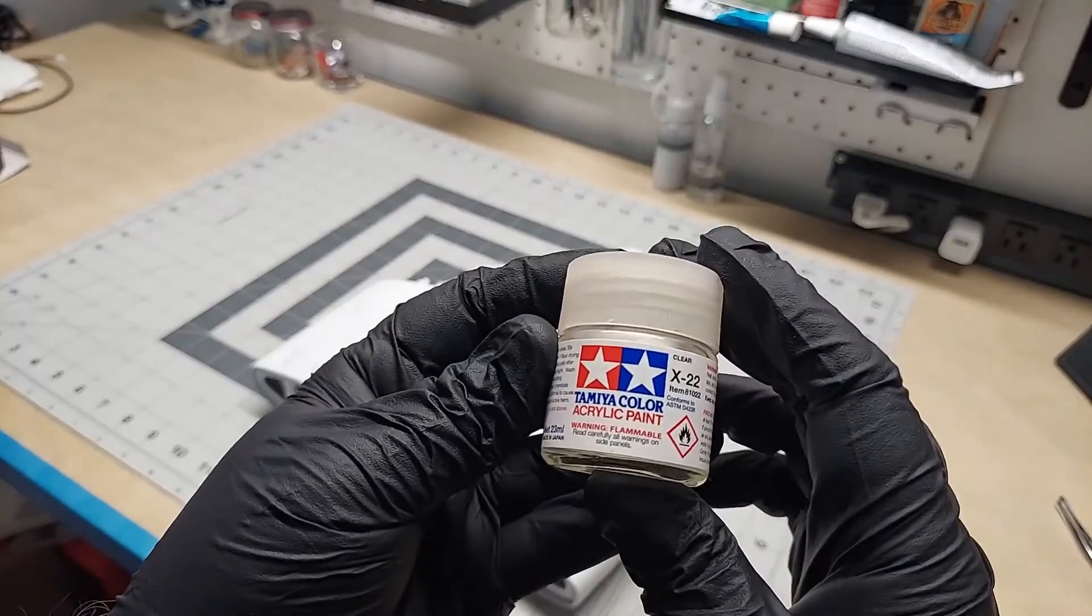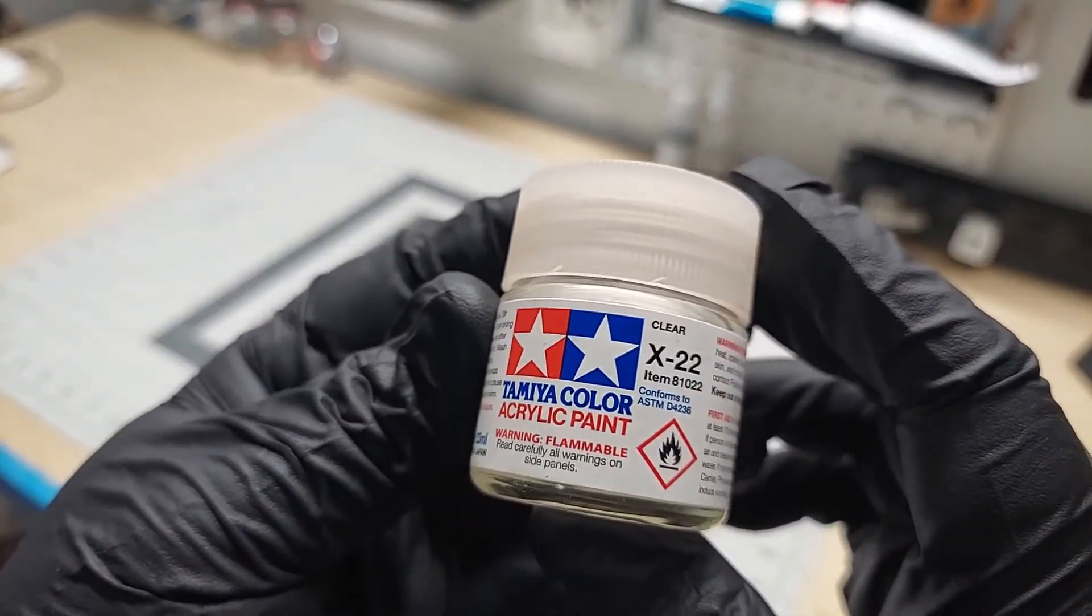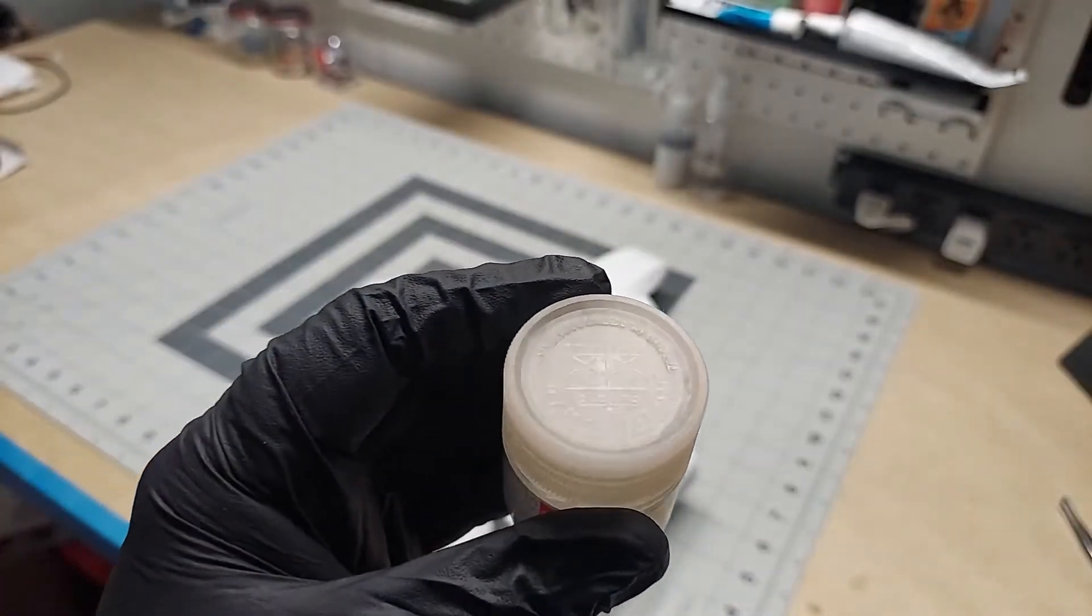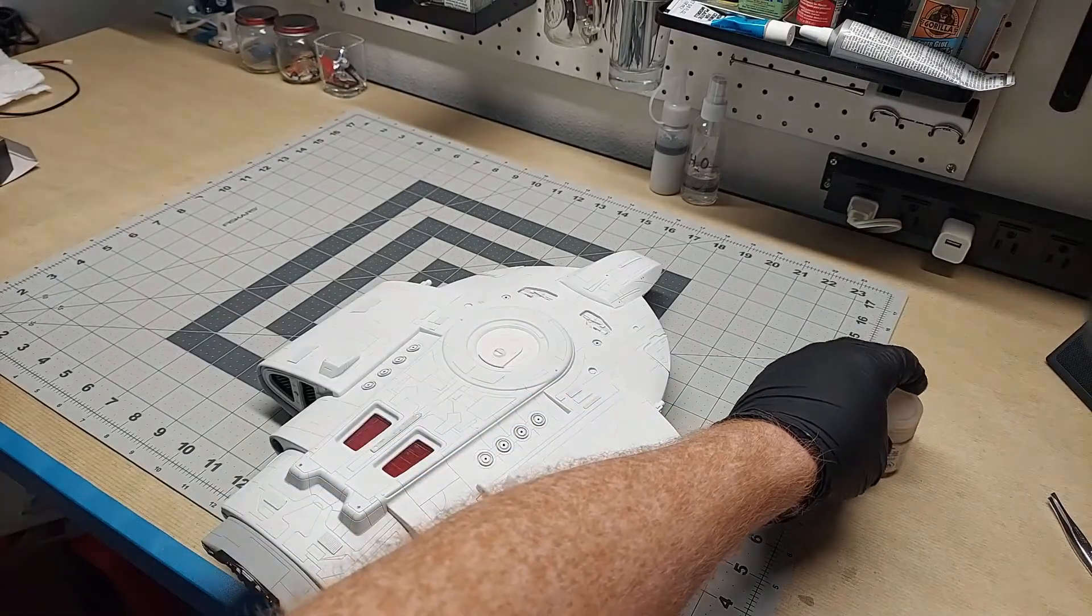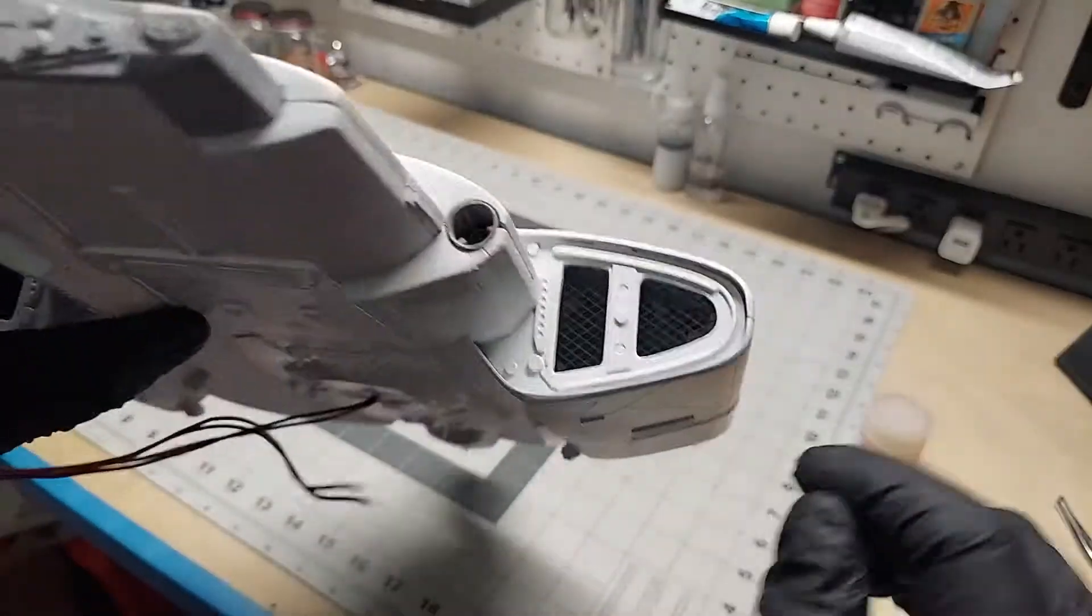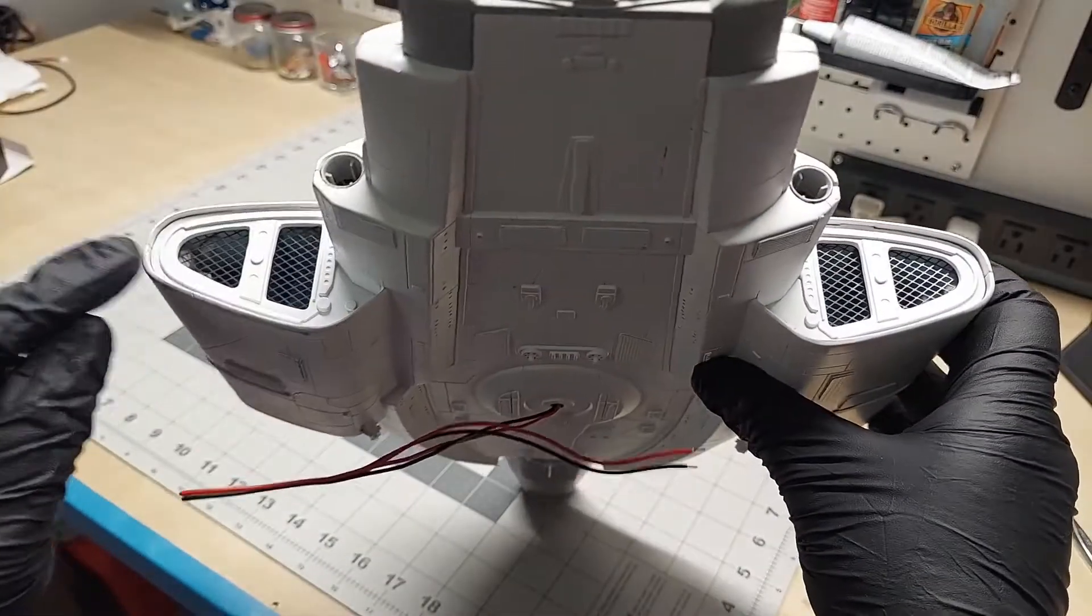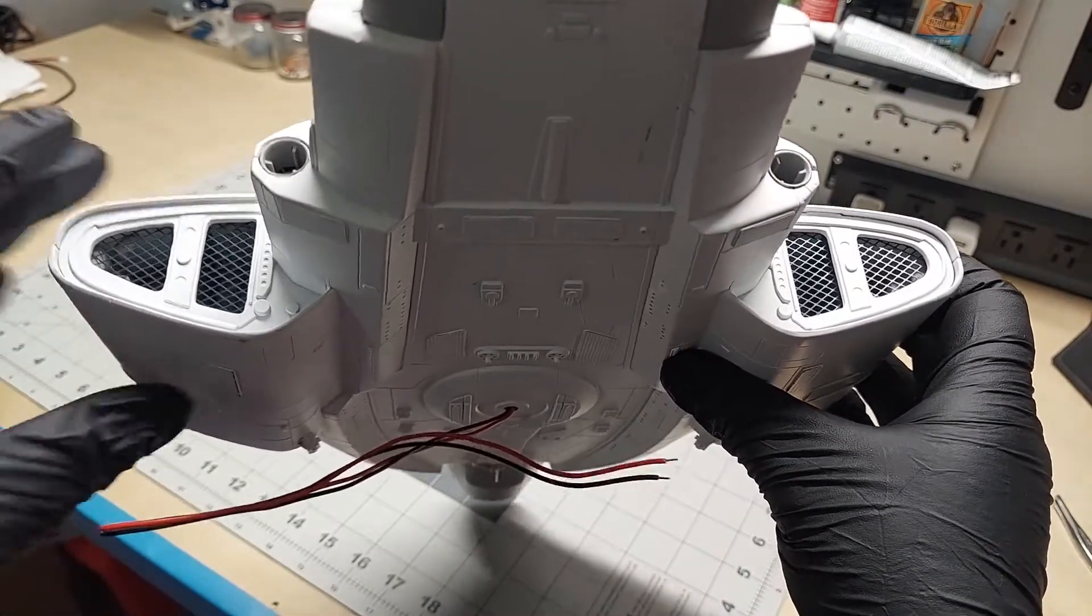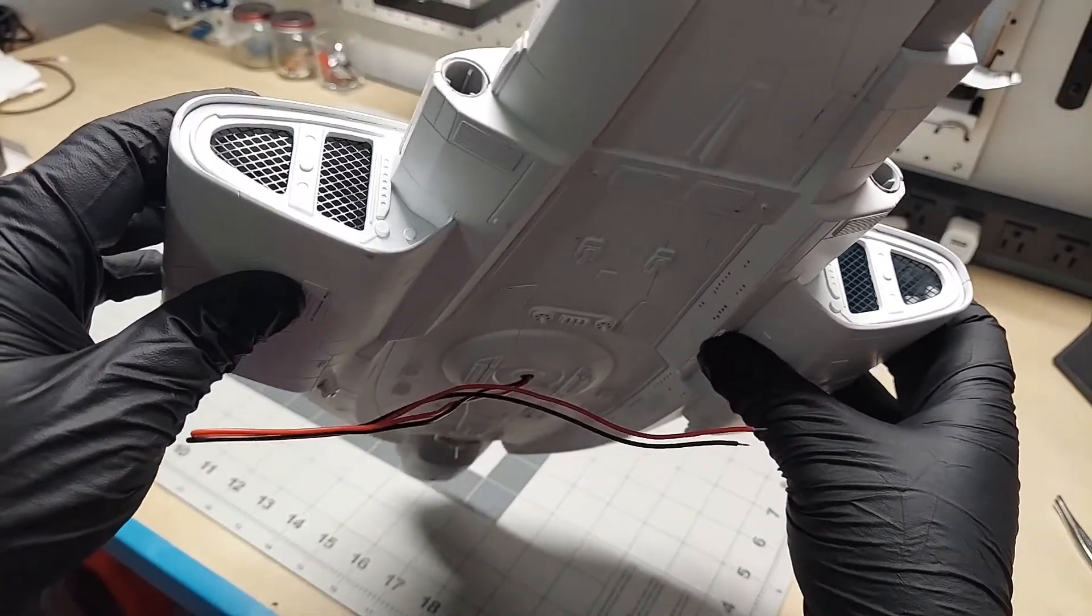This is what I clear coated it with, just a Tamiya acrylic line X22 clear. I just thinned it out a little bit with some of the Tamiya thinner and ran it through my airbrush and airbrushed over these grill parts on the warp engines. I did that before I installed the grills in, and it turned out fine.